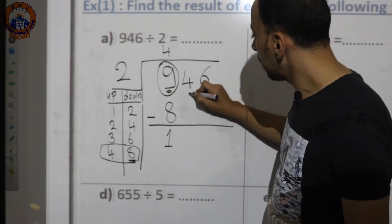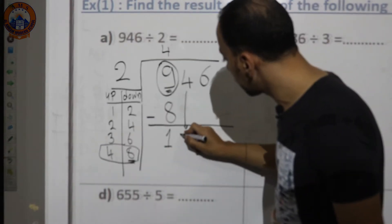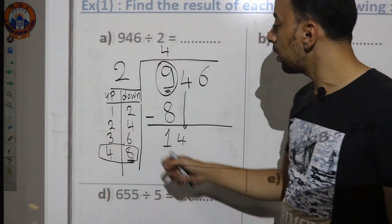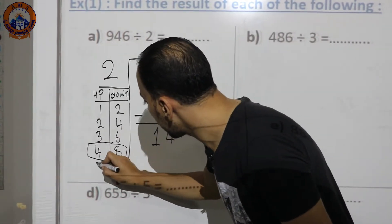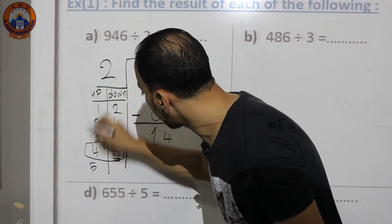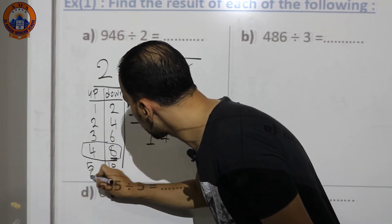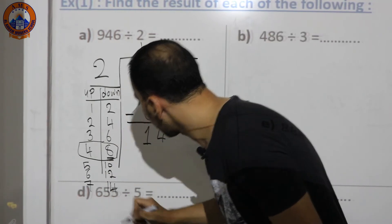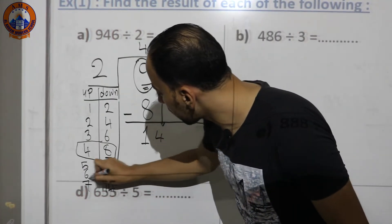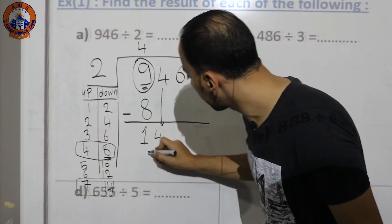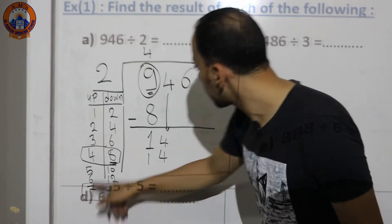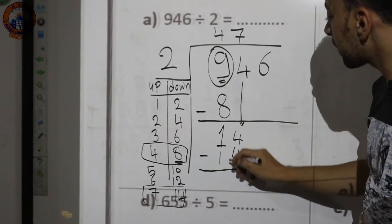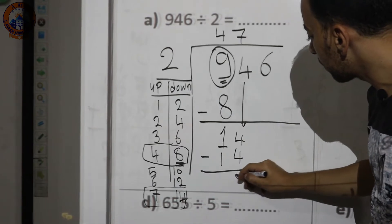After subtraction, bring down the next number, 4, giving us 14. Search for 14 in the table: 2×5=10, 2×6=12, 2×7=14. Here is 14 in the table, so I put 14 down and 7 up. Then subtract: 14−14=0.